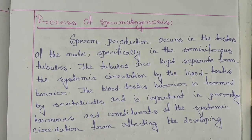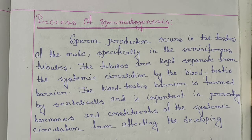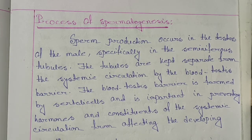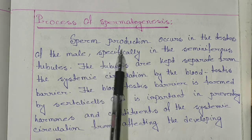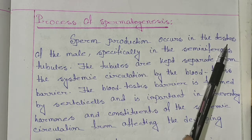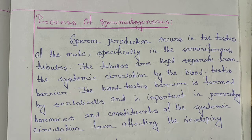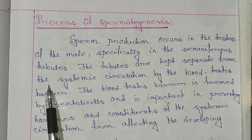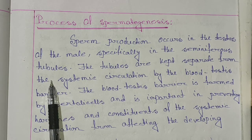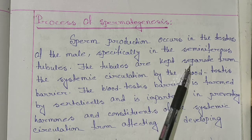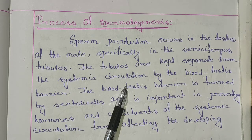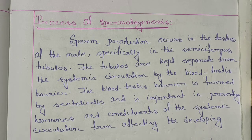The process of spermatogenesis — spermatogenesis kaise hota hai, uska process kya hota hai — woh hum ab discuss karenge. Sperm production occurs in the testis of the male, specifically in the seminiferous tubules. Puruso ka jo testis hota hai, uske andar jo seminiferous tubules hote hain, usi mein sperm produce hota hai.